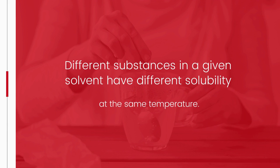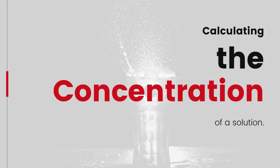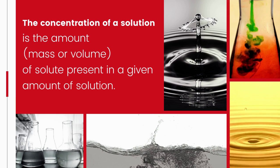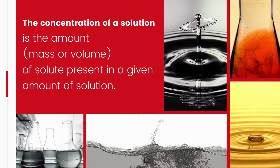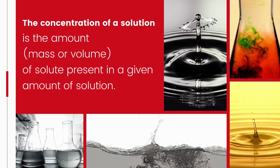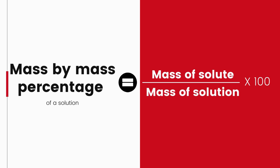Different substances in a given solvent have different solubility at a given temperature. The concentration of a solution is the amount — mass or volume — of solute present in a given amount of solution. We can calculate concentration by mass-by-mass percentage: mass of solute divided by mass of solution, times 100. Note that it is the mass of the solution we divide by, not the mass of the solvent.